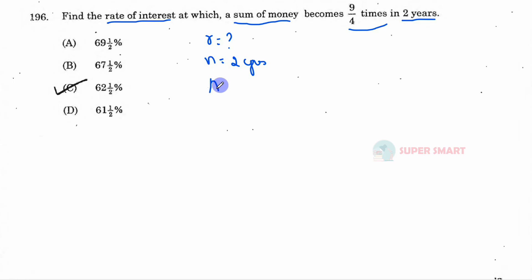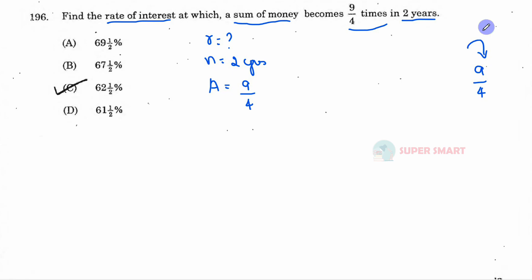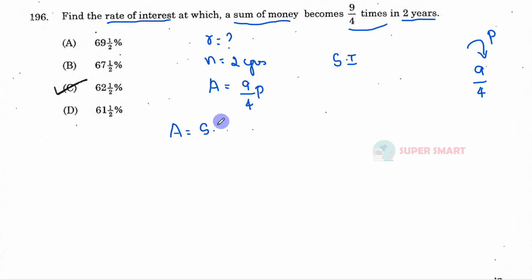The amount is 9.4 times. So what is the amount? The amount is 9.4 times the principal amount. We will specify what we are going to do — Simple Interest. The amount is 9.4 of the principal.